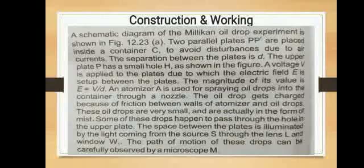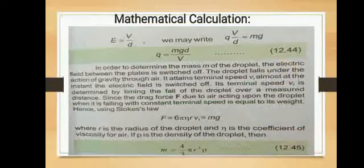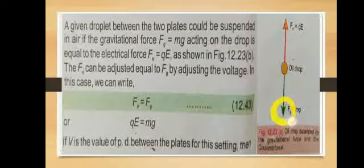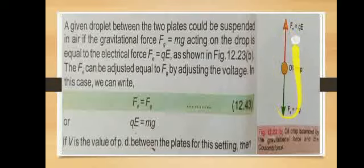The oil droplet is in balanced form due to two forces: Fₑ (electric force) and Fg (gravitational force). Electric force is represented as Fₑ = QE and gravitational force as Fg = Mg (weight of the droplet). When the oil droplet is in equilibrium, these two forces balance: gravitational force Mg and electric force QE are equal.